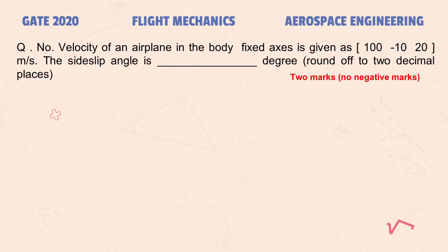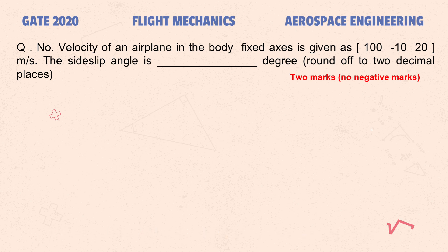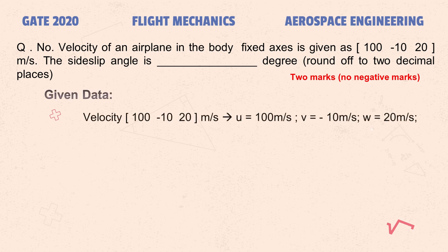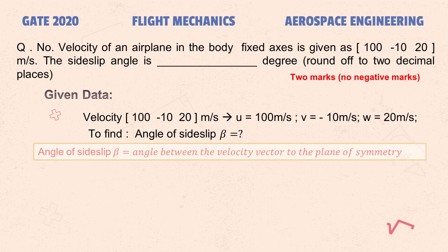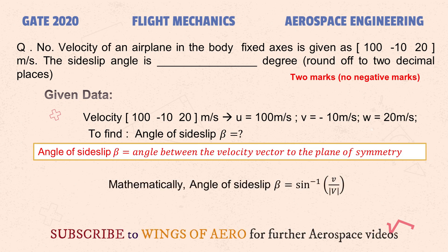Second question: the velocity of an airplane in a body-fixed axis is given as (100, −10, 20) meters per second. The side slip angle needs to be found in degrees, rounded off to two decimal places. This question carries two marks with no negative marking. Given data: u = 100 m/s, v = −10 m/s, w = 20 m/s. The side slip angle is the angle between the velocity vector and the plane of symmetry.